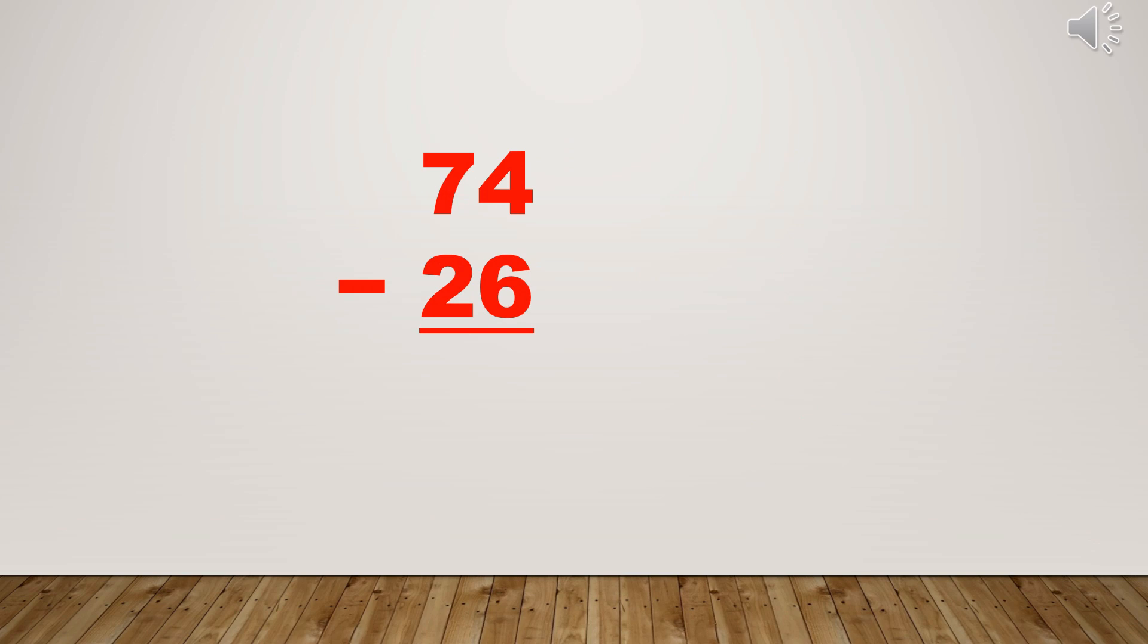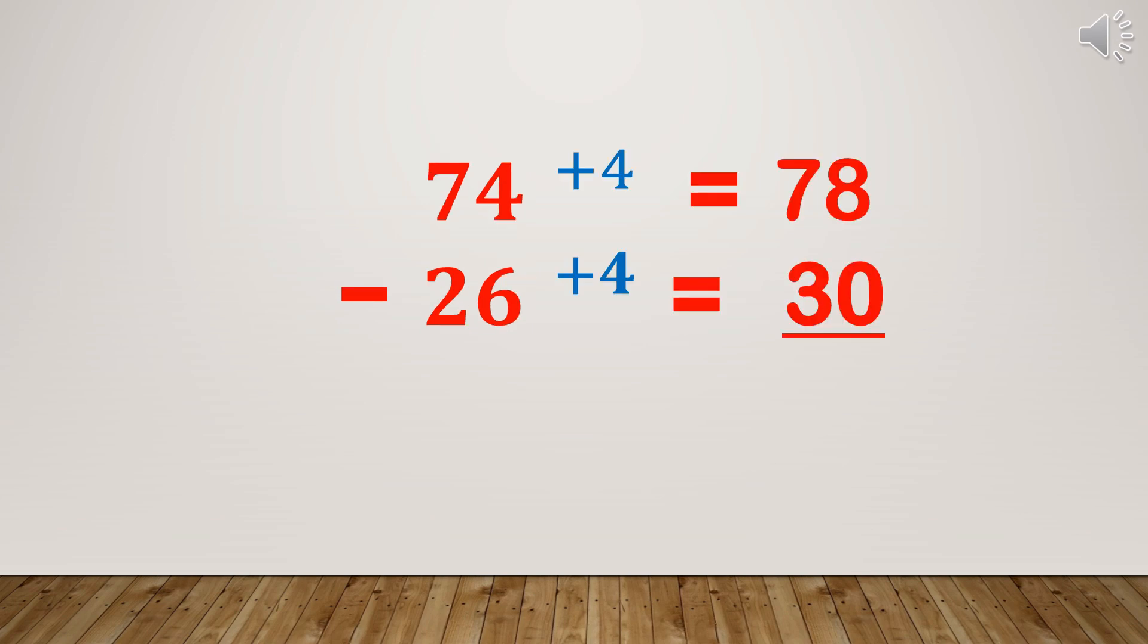To make the subtraction easier, let's make our subtraction divisible by 10 by adding 4. Add 4 to 26 to make it into 30. Add also 4 to 74 to make it 78. So it will now be easy for us to subtract. 78 minus 30 is equal to 48.